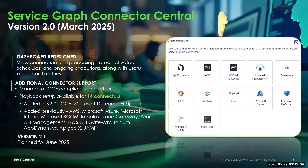Version 2.0 went live in March of 2025, and version 2.1 will be available in June of 2025. In this version, we have a redesigned dashboard where you can view connection and processing status, activated schedules and ongoing schedule executions, as well as useful metrics. There's also additional connector support where you can manage all your CCF-compliant connectors, which are the Common Connection Framework connectors. Currently we have 14 connectors available, and more are coming with each release.